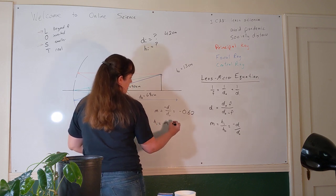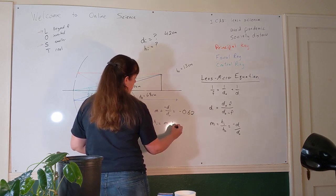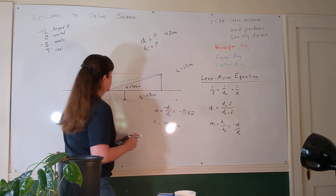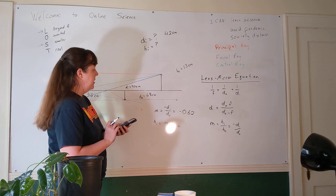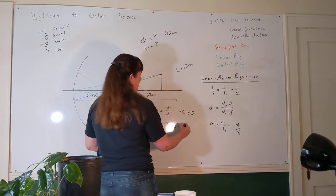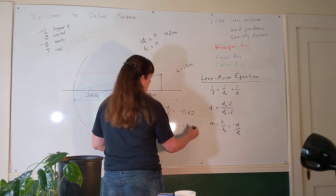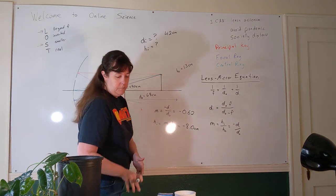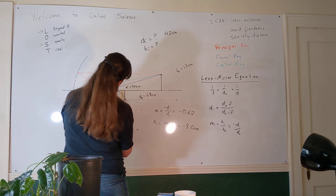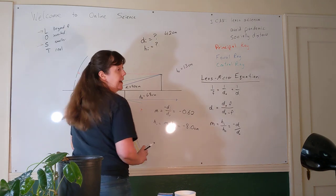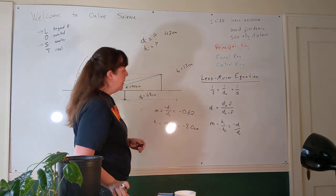It's going to be the magnification times the object height. My object height was 13. 13 times negative 0.62 is negative 8.0 centimeters. And if I measure the height of this image, I get about seven and a half centimeters. Seven and a half centimeters seems about right to me.